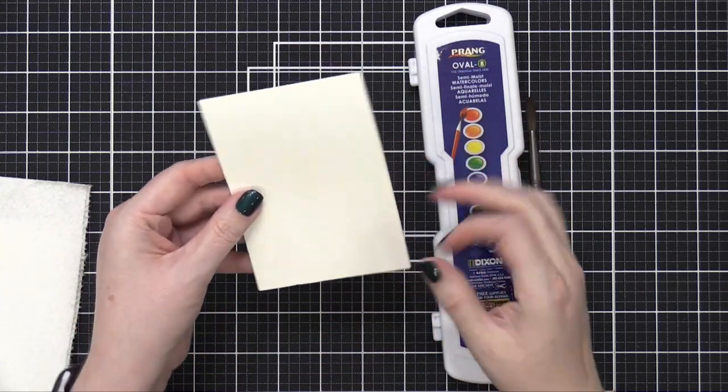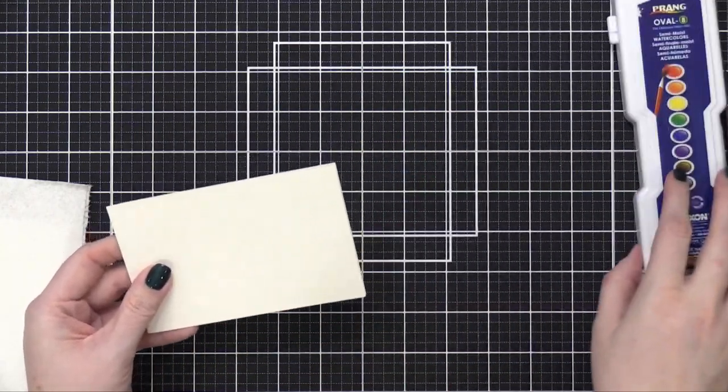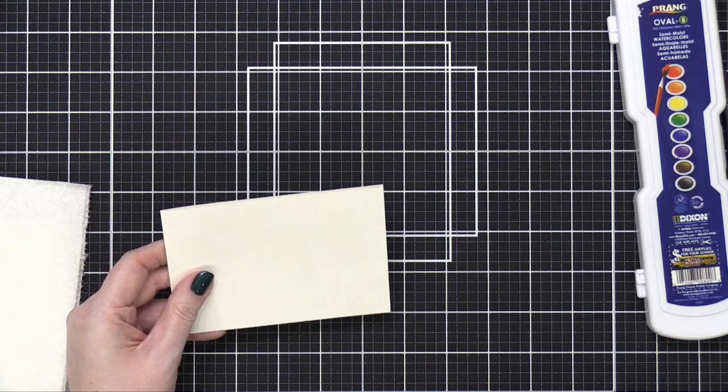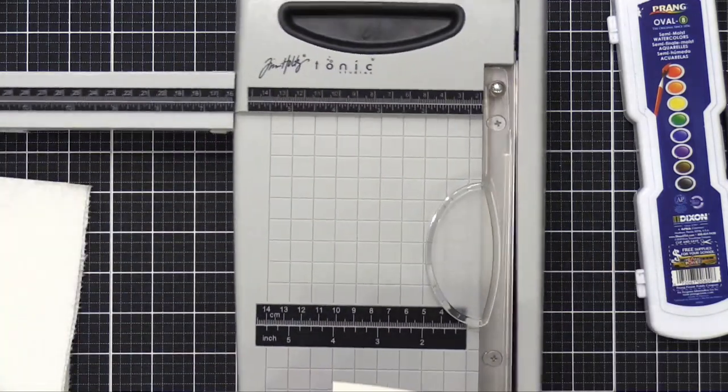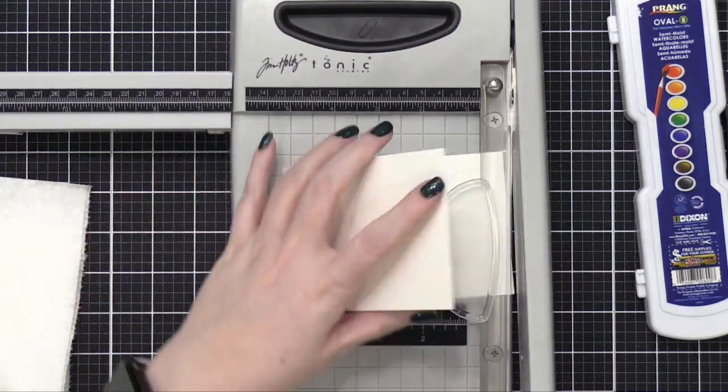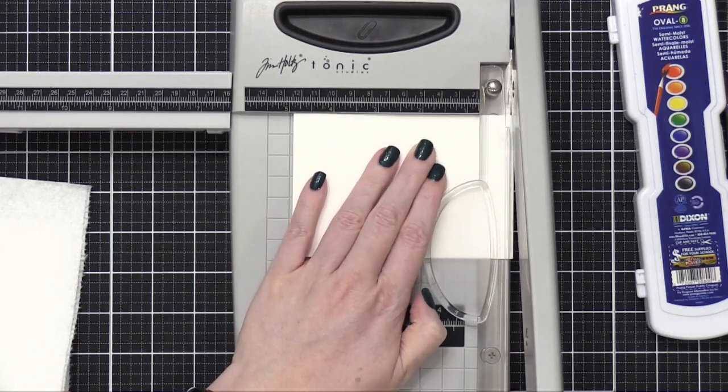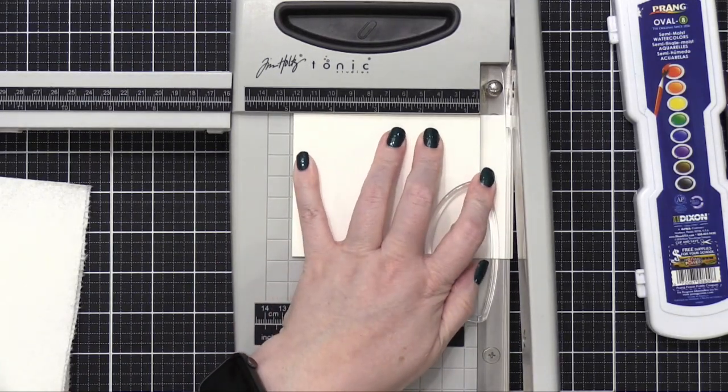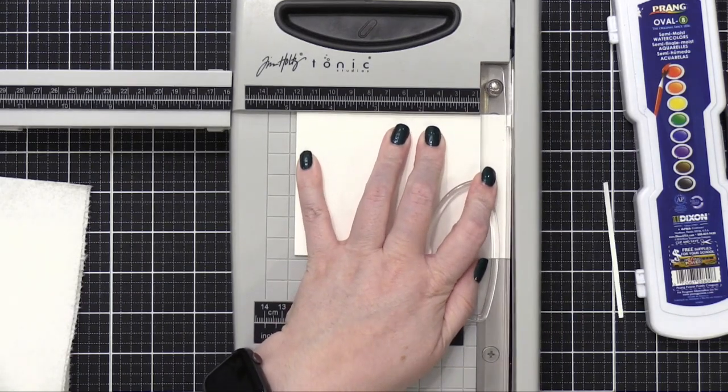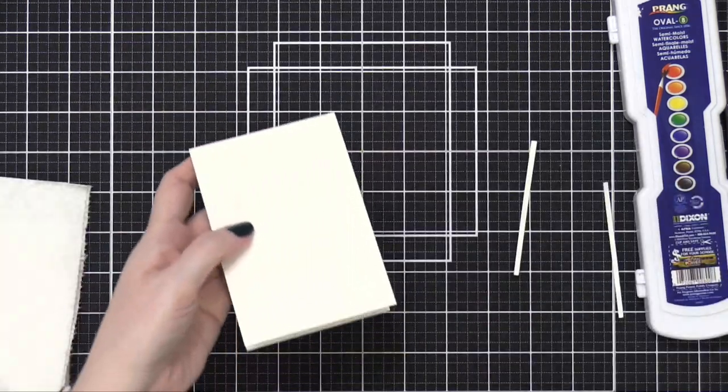And then right now it's five. I'm going to trim off the bottom just so that it's a little bit shorter. I wanted to do this after I folded it because I scored it at five inches and it was easier than having a strange measurement. So now it's just a little bit smaller.